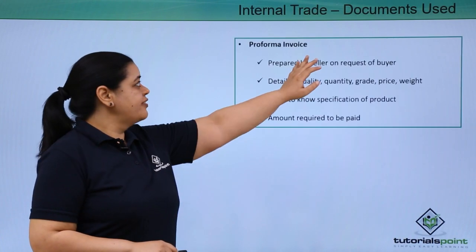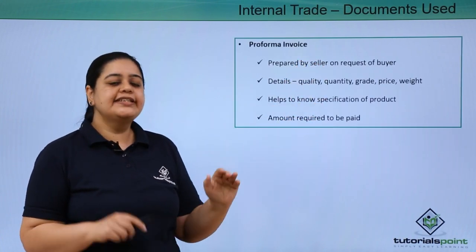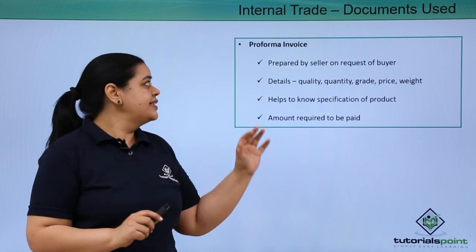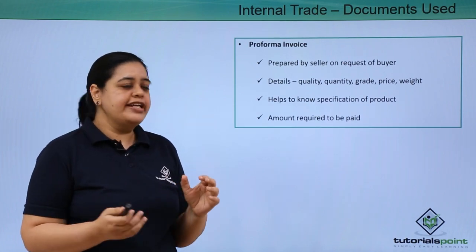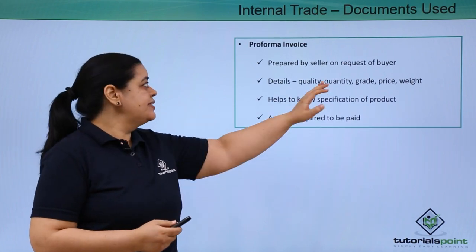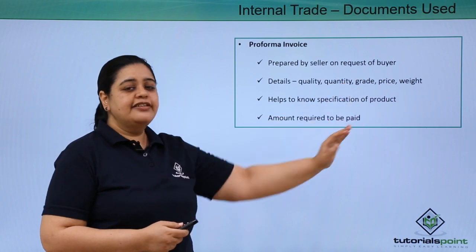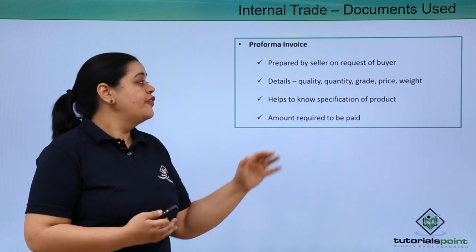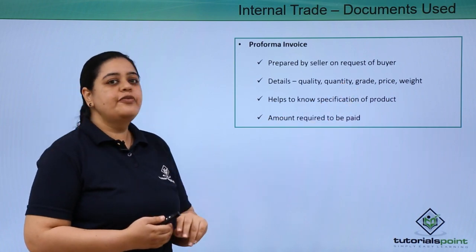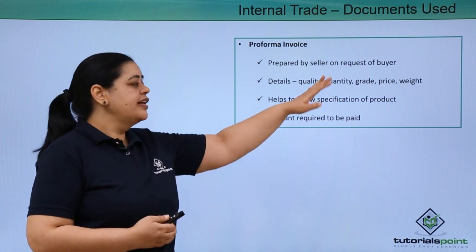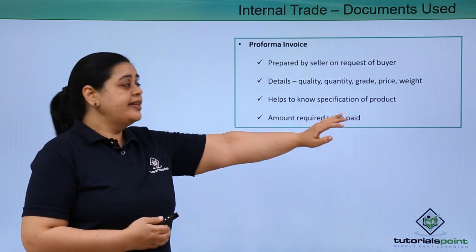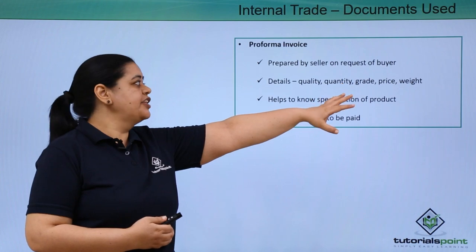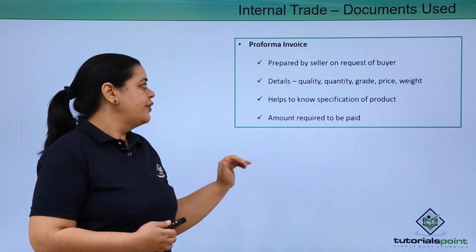The first one is a performa invoice. This is not a proper invoice — this is a performa invoice. It is prepared by the seller when the buyer requests him to do so. The reason for preparing it is to provide details on the quantity, grade, quality of goods, the price, and the weight.